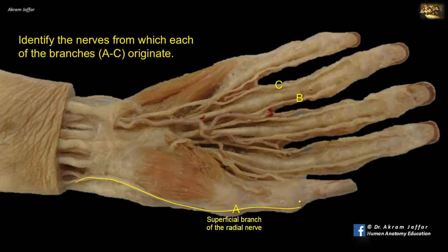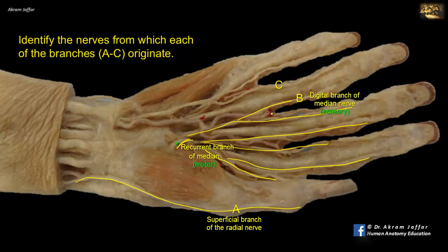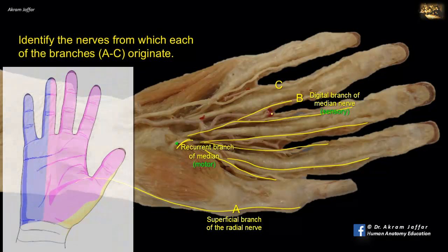The median nerve in the palm, apart from motor branches like the recurrent branch of the median nerve, sends cutaneous sensory fibers — digital branches — and these are sent to the adjacent sides of the lateral three and a half digits. Considering this, B is a digital branch of the median nerve supplying the radial side of the ring finger.